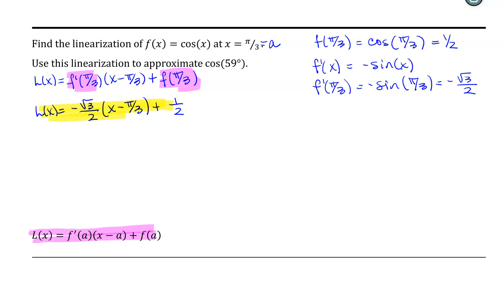Now, let's go ahead and use this linearization to find the cosine of 59 degrees. So the cosine of 59 degrees is going to be approximated by the linearization. However, there is one thing that we must attend to before we do this.